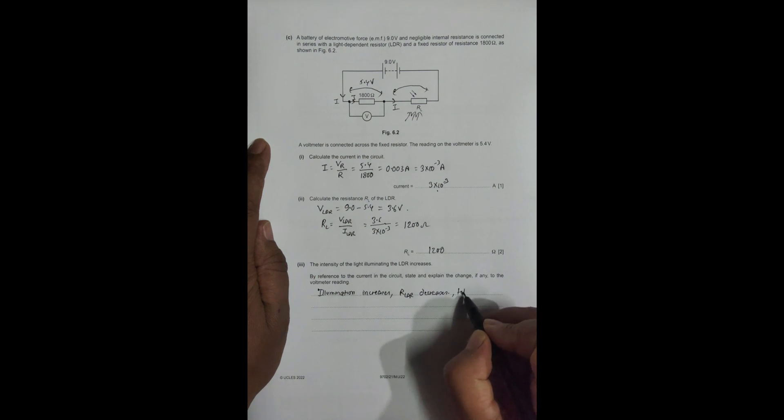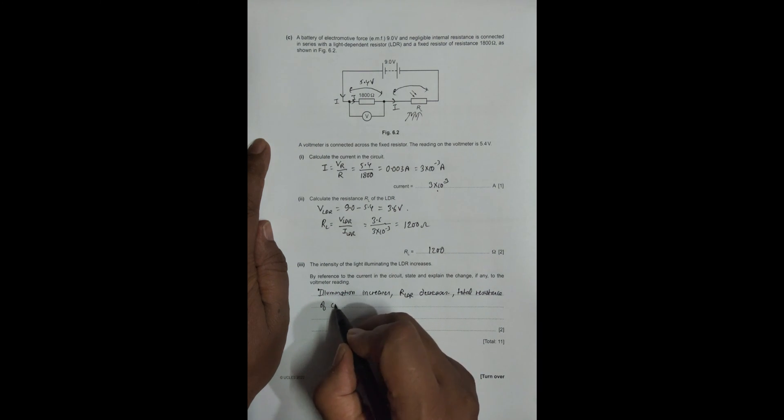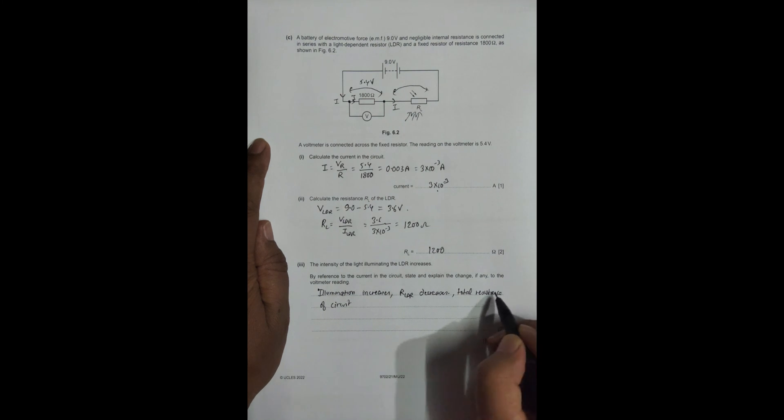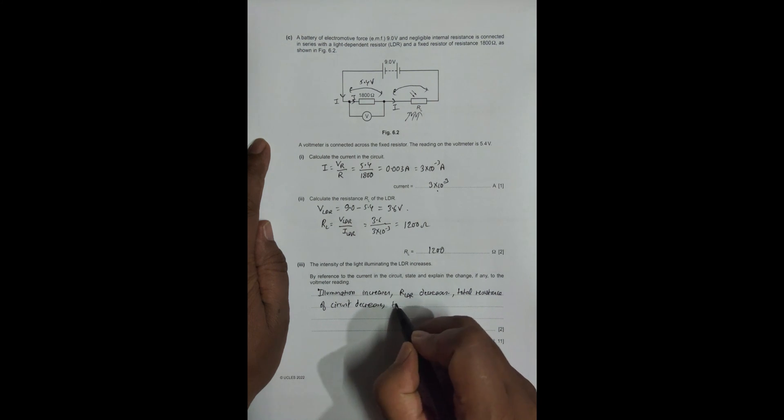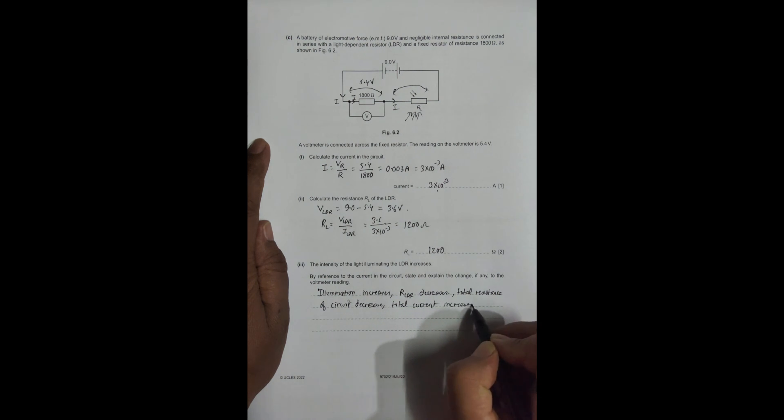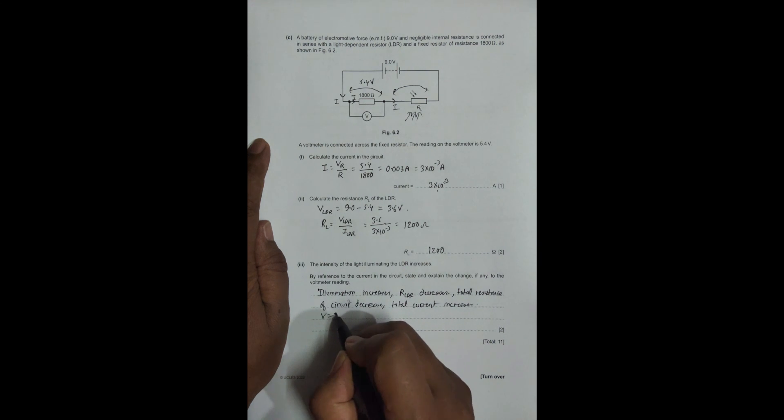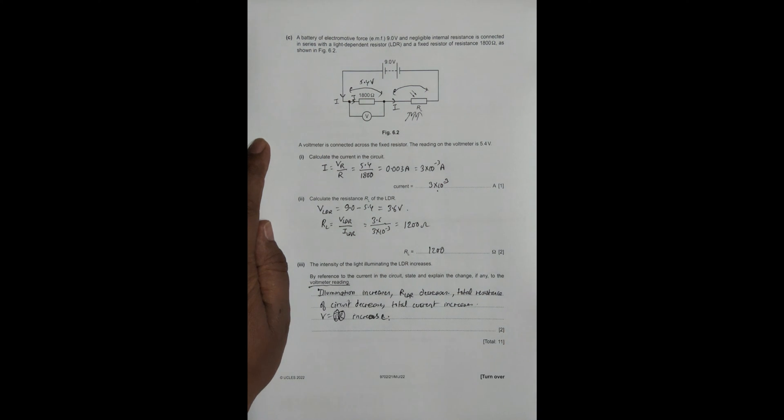So the total resistance of the circuit will decrease. This means the total current in the circuit will increase. Now, V = I×R. Since R is fixed and I increases, V should increase. So the voltmeter reading should increase.